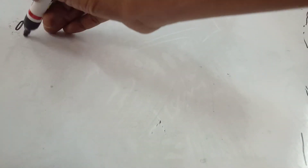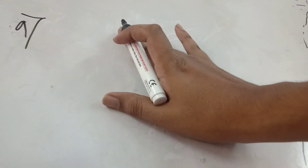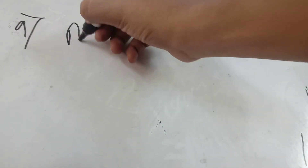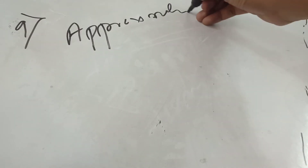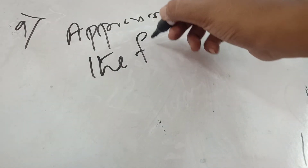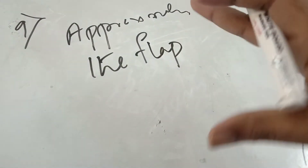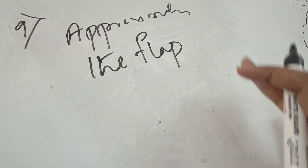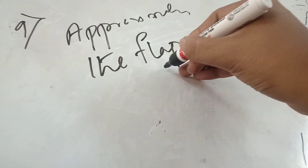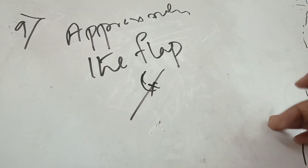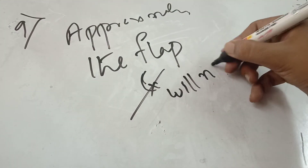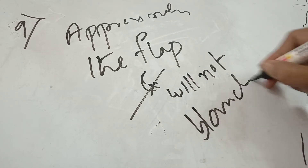Ninth principle: you are approximating the flap — that is your goal. You are not strangling the tissue. Your suture should be placed such that the tissue will not blanch. It should not be so tight that it causes blanching.